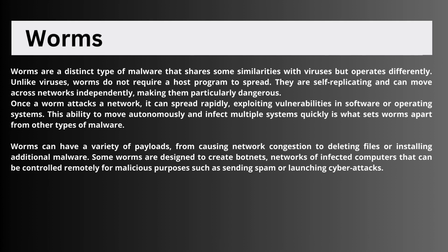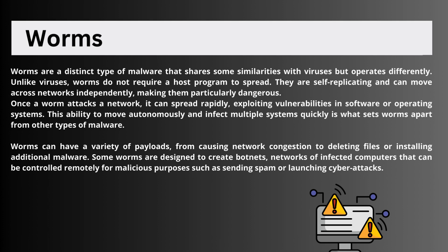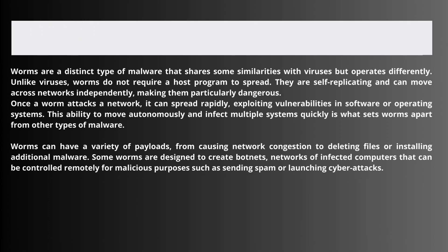Worms are a distinct type of malware that shares some similarities with viruses but operates differently. Unlike viruses, worms do not require a host program to spread. They are self-replicating and can move across networks independently, making them particularly dangerous. Once a worm enters a network, it can spread rapidly, exploiting vulnerabilities in software or operating systems. This ability to move autonomously and infect multiple systems quickly is what sets worms apart from other types of malware.